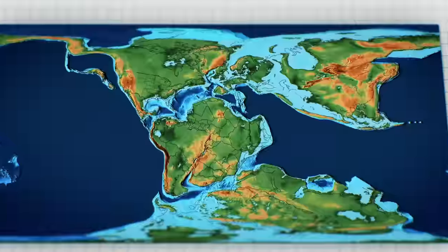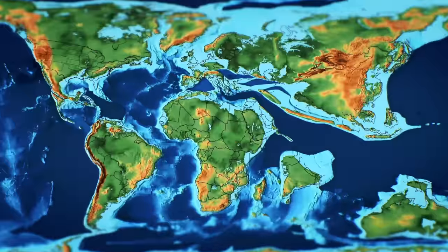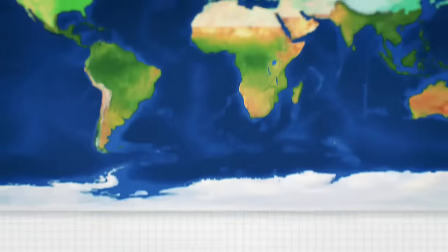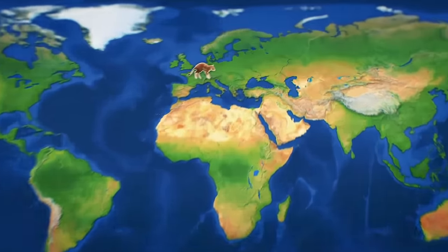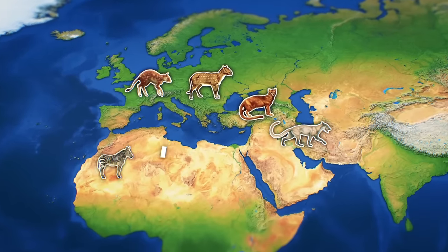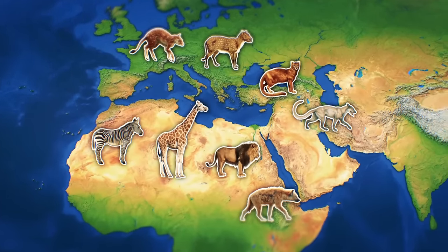Africa, however, never fully escaped the reach of Laurasia, having reconnected with Asia approximately 30 million years ago. This opened up the two lands for exchange, with many of the Laurasian mammals coming down into Africa, filling the continent with even and odd-toed ungulates, felines and canines, and so on.